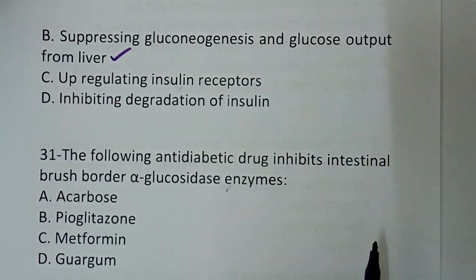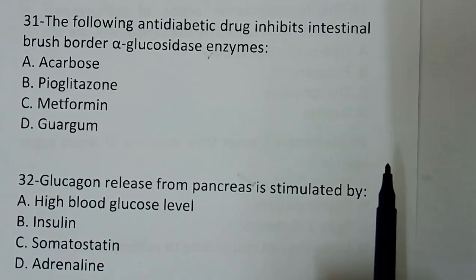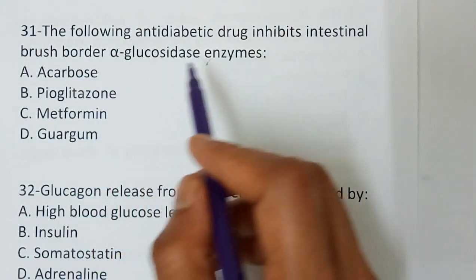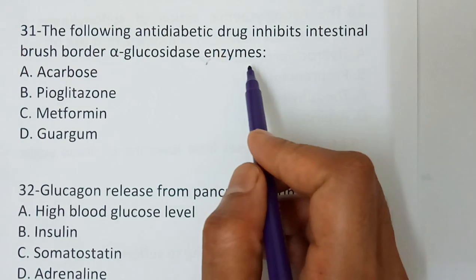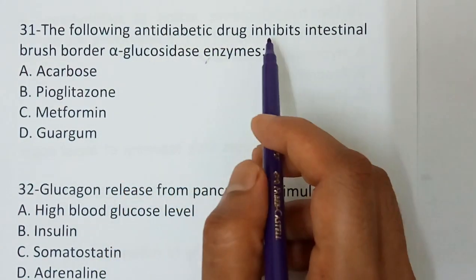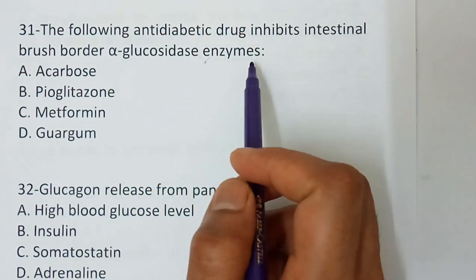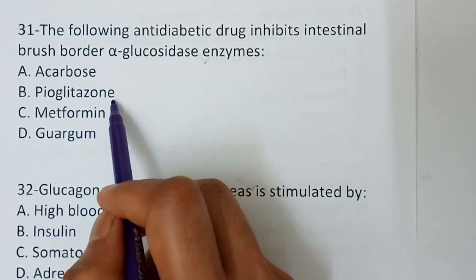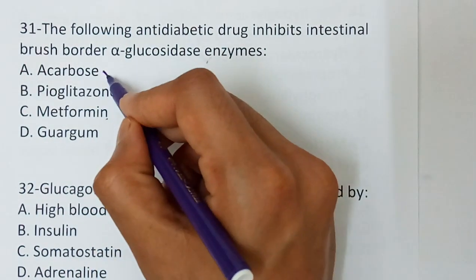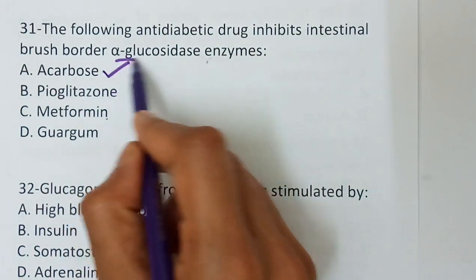Question number 31 — the following anti-diabetic drug inhibits the brush border alpha-glucosidase enzyme: acarbose, pioglitazone, metformin. The correct answer is acarbose. Acarbose inhibits the alpha-glucosidase enzyme.